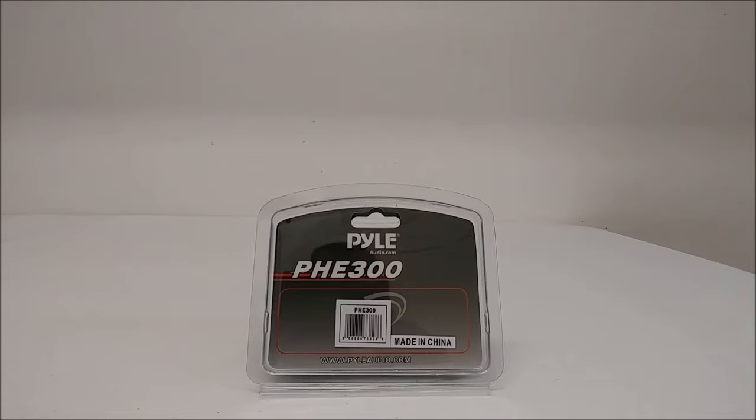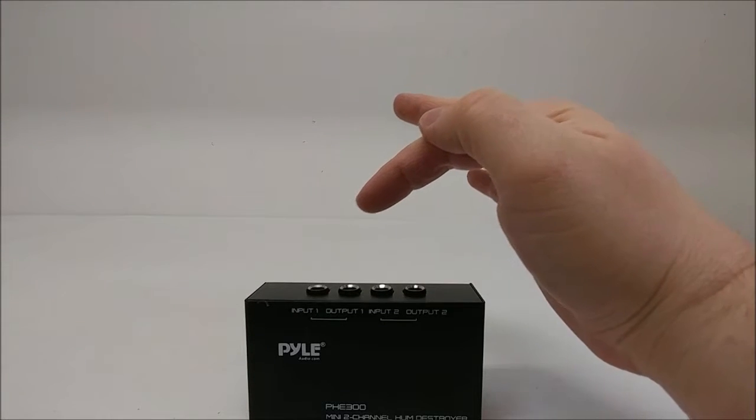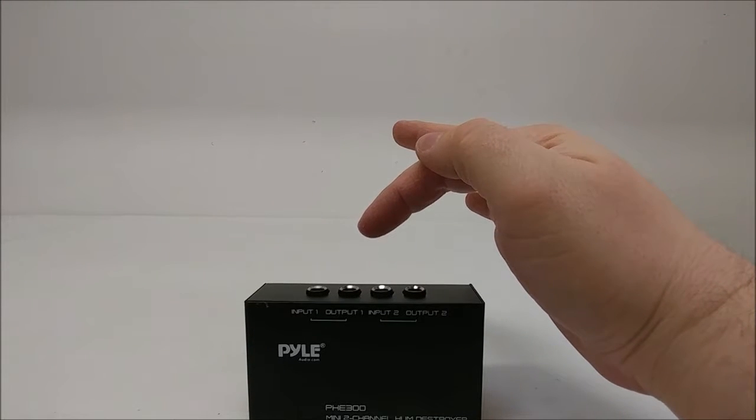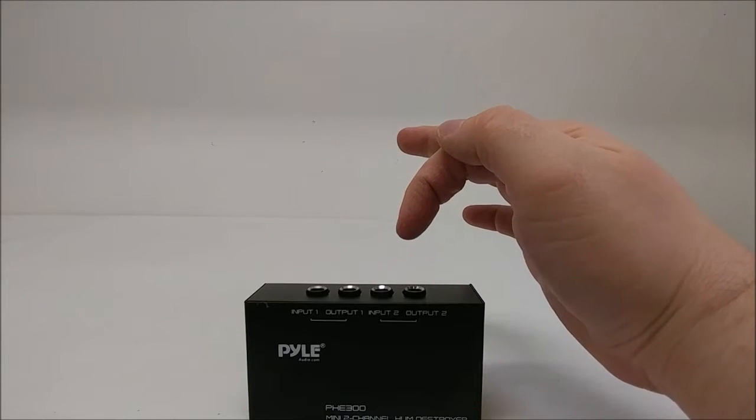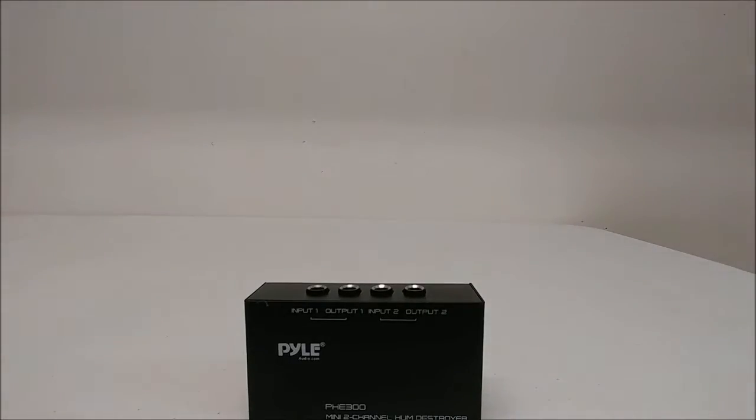Here is a quick overview of the Pyle PHE300. On the top of the unit you have two 1/4 inch TRS inputs and two 1/4 inch TRS outputs for two mono and one stereo signal.